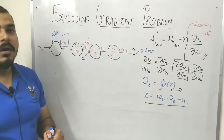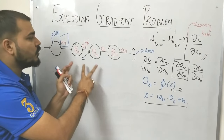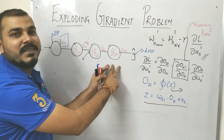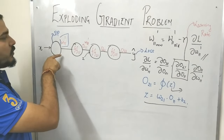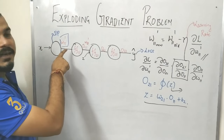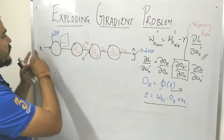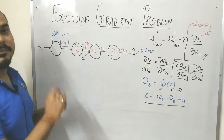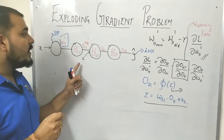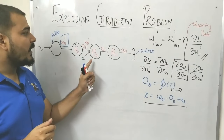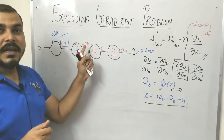Let us take a good example to understand what exactly is the exploding gradient problem. I'm taking a two hidden layer, three hidden layer neural network. This is my two hidden layers and this is my output layer. My input features are getting passed in, and the first weight assigned is w11. Then the summation of weights and input features happens and an activation function like sigmoid gets applied.